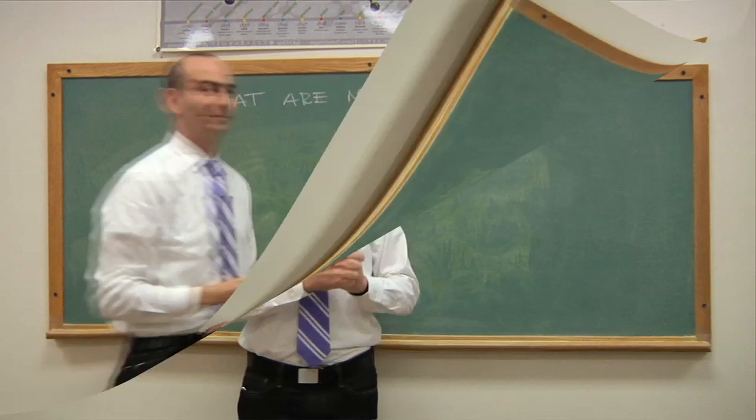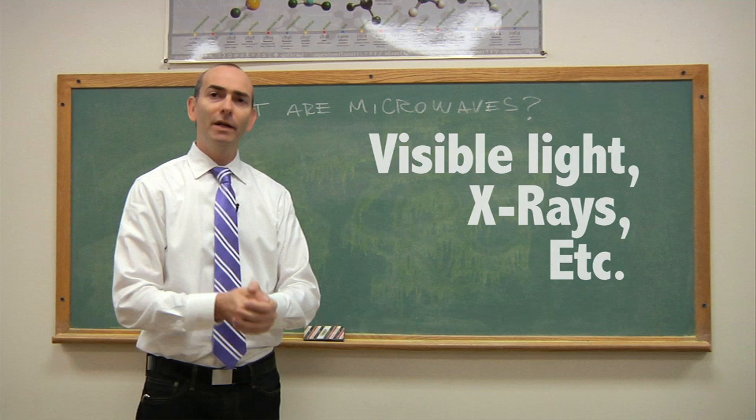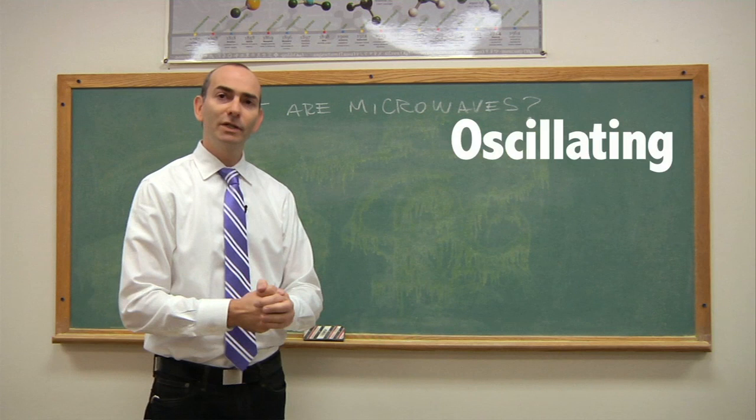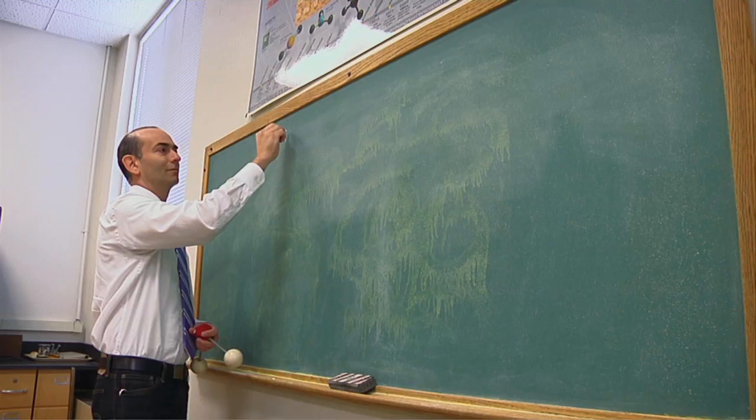Now what are microwaves? A microwave is a form of electromagnetic radiation, such as visible light, x-rays, etc. It's just a form of energy that propagates in space at the speed of light, in the form of an oscillating electromagnetic field. An oscillating electromagnetic field is just a wave whose amplitude is changing over time.